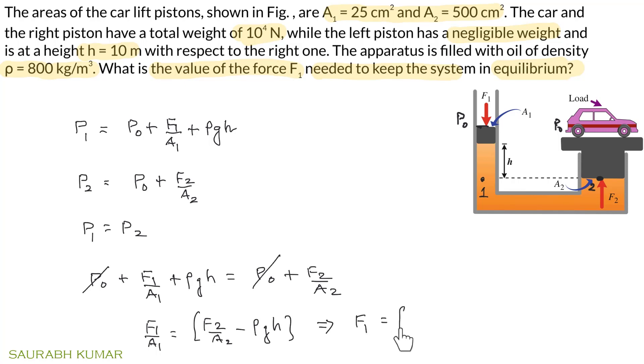So P₀ plus F1/A1 plus ρgh equals P₀ plus F2/A2. Therefore F1 equals (F2/A2 minus ρgh) times A1. Now put numerical values: F1 equals 10⁴ divided by A2, which is 500 times 10⁻⁴ m², minus ρ is 800, g is 10, h is also 10 meters, times A1 which is 25 times 10⁻⁴. Simplify to get the desired unknown.